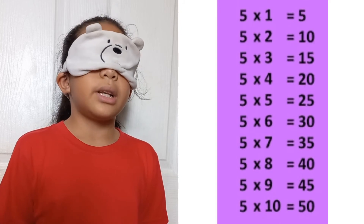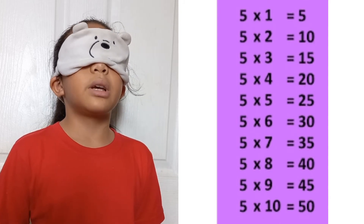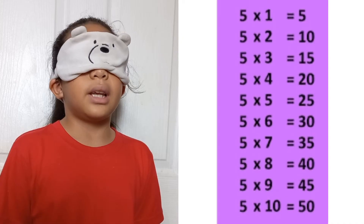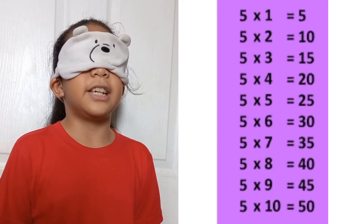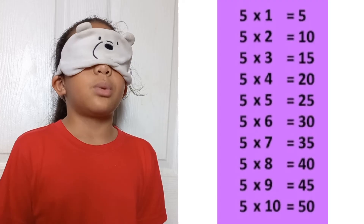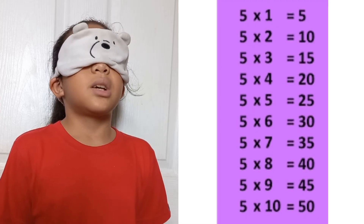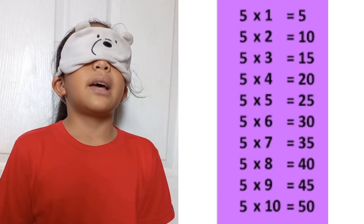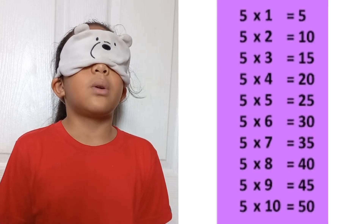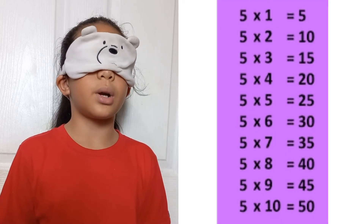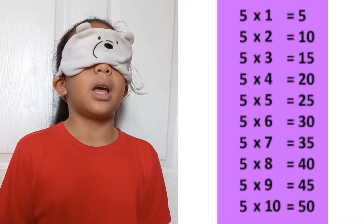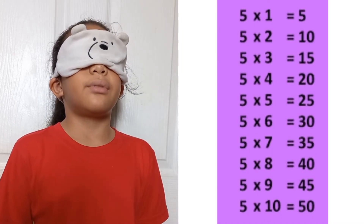5 times 1 equals 5. 5 times 2 equals 10. 5 times 3 equals 15. 5 times 4 equals 20. 5 times 5 equals 25. 5 times 6 equals 30. 5 times 7 equals 35. 5 times 8 equals 40. 5 times 9 equals 45. 5 times 10 equals 50.